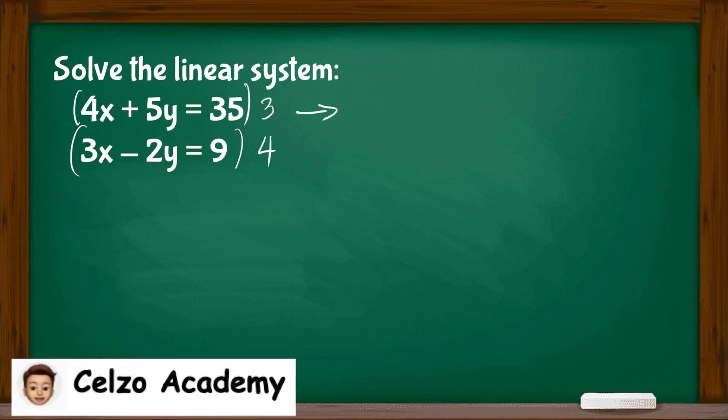That way, the first equation becomes 12x + 15y = 105. You need to multiply each term by 3. The second equation, I will multiply by 4, so that will give me 12x - 8y = 36.